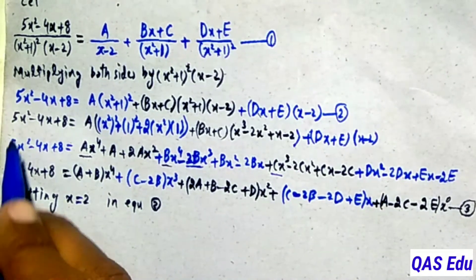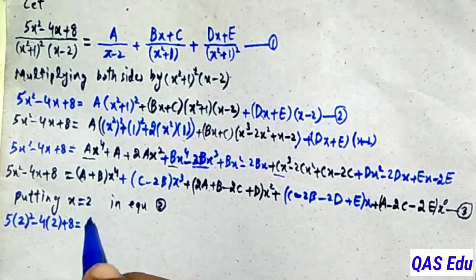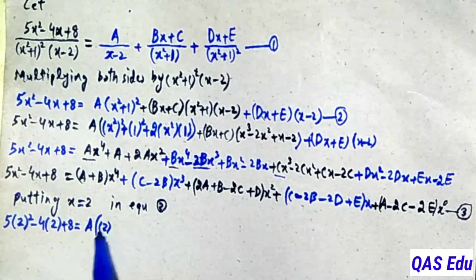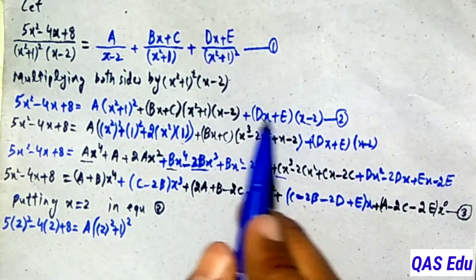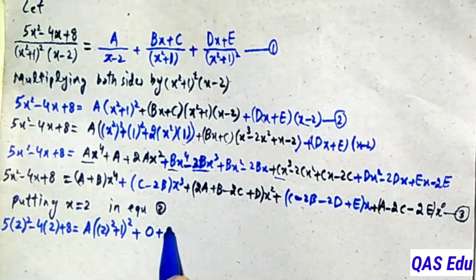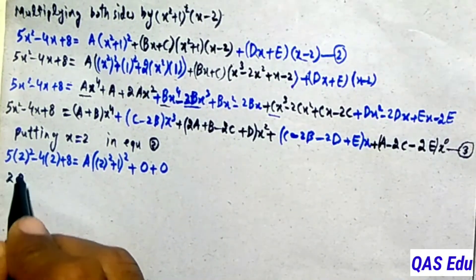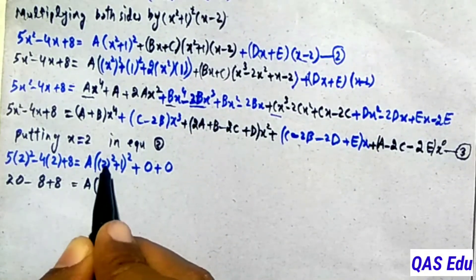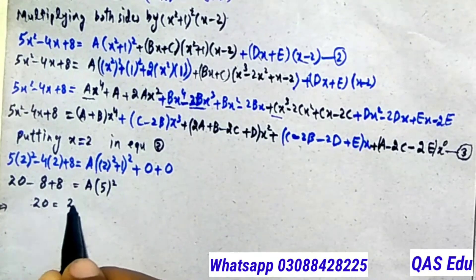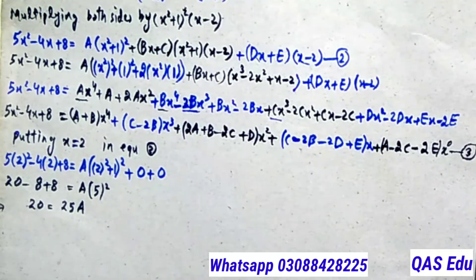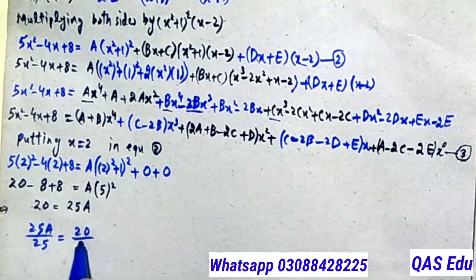Substituting x equals 2 into equation 2: the term x minus 2 becomes 2 minus 2 equals 0, so those terms vanish. We get 5 times 2 squared minus 4 times 2 plus 8 equals A times 2 squared plus 1 whole squared. That gives 5 times 4 minus 8 plus 8 equals A times 5 squared, so 20 equals 25A, therefore A equals 20 divided by 25 equals 4 over 5.